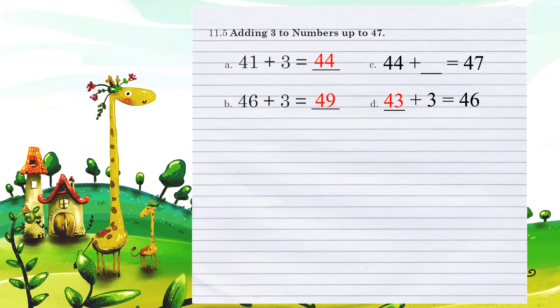And example C. 44 plus what number equals 47. If we count in our head up to 47, 45, 46, 47, we have moved 3 spots, so we are adding 3.